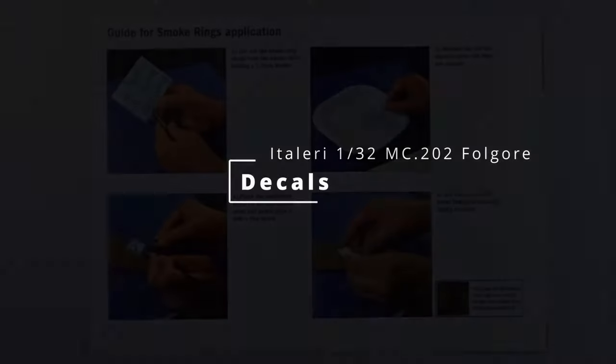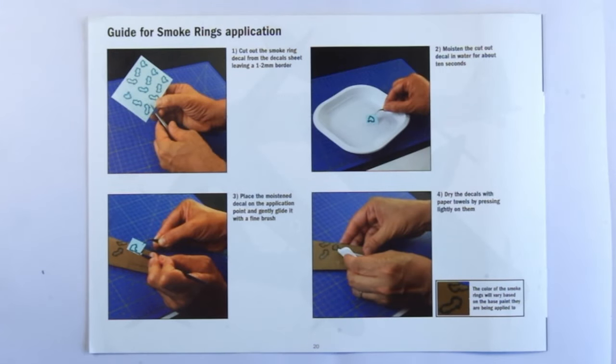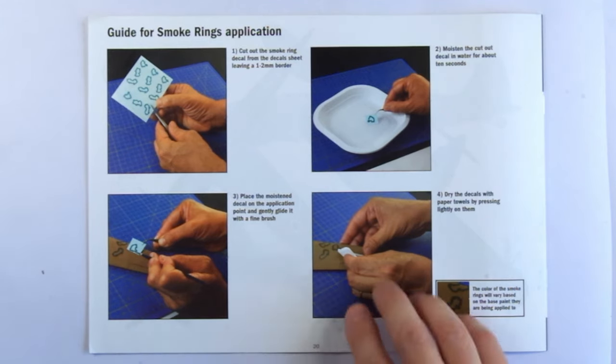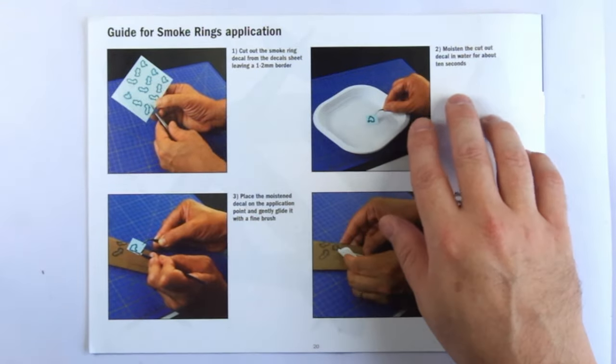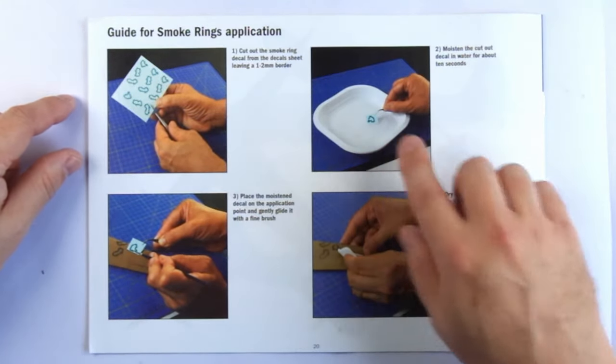Next we're onto the decals, but before we talk about the actual decals themselves, Italeri also provide a full guide to using the smoke ring camouflage decals. This is fairly basic, but does also point out that their appearance will vary depending on the base coat they're applied over.